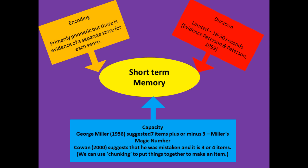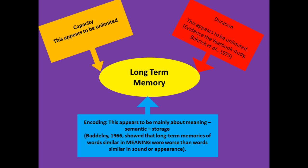For capacity, George Miller suggested seven items plus or minus two — this is called Miller's magic number and is very famous. However, in 2000 Cowan suggested that Miller was mistaken and actually the capacity is limited to three or four items. He said Miller could get seven, nine, or eleven items because people were chunking. Chunking is when you put many things together to make one item. For instance, if I said to you 'put the kettle on,' you think of one item, not all the individual steps of picking it up, filling it with water, and switching it on — all those things chunk together to make one item.